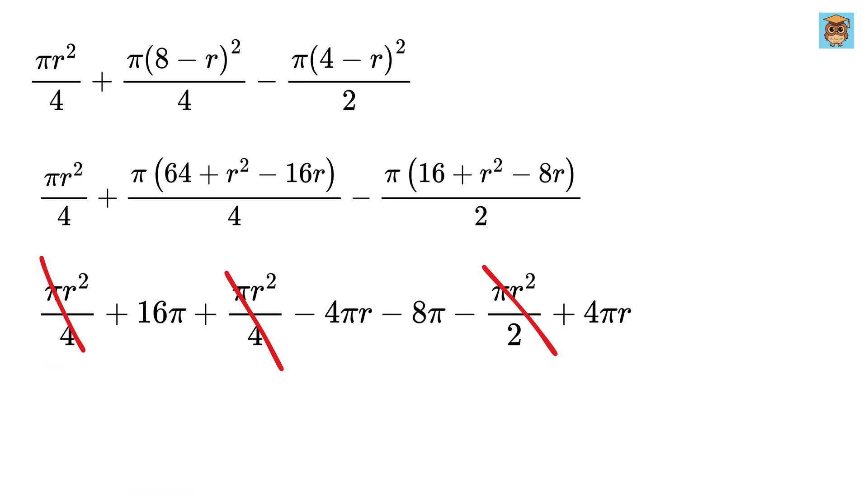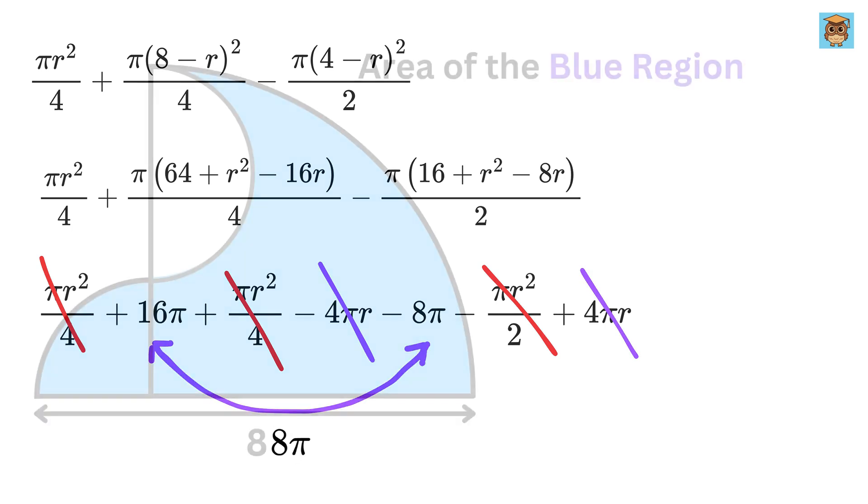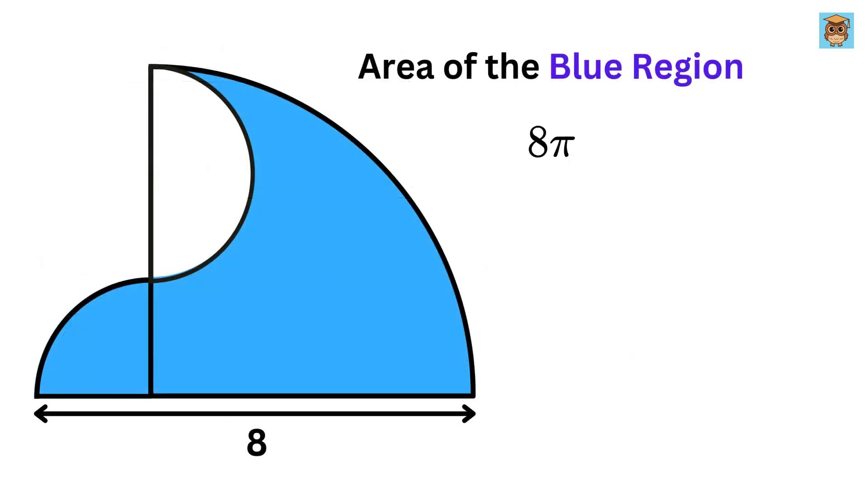Noice. Now, this minus 4 pi r will be cancelled with this one. And this minus, this will become 8 pi. And that's it. This is our final answer.